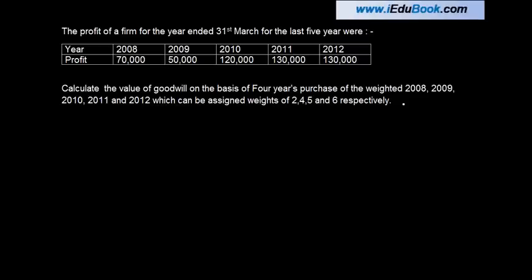Okay, let's look at a question on weighted average method. The profit of a firm for the year ended 31st March for last five years were as under. Year 2008, 9, 10, 11 and 12. Calculate the value of goodwill on the basis of four years purchase of the weighted 2008, 9, 10, 11 and 12 which can be assigned weights of 2, 4, 5 and 6 respectively. Actually there's one weight missing over here, so let's put one here.